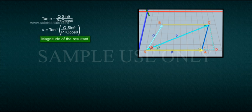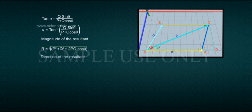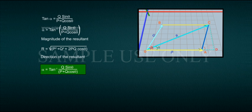In summary: the magnitude of the resultant R equals the square root of P squared plus Q squared plus 2PQ·cos theta, and the direction of the resultant alpha equals tan inverse of (Q·sin theta divided by P plus Q·cos theta).